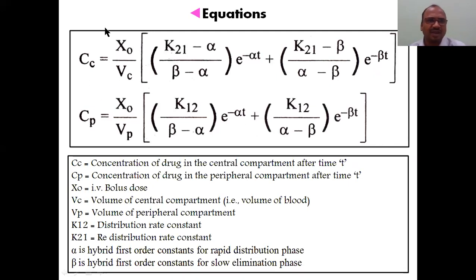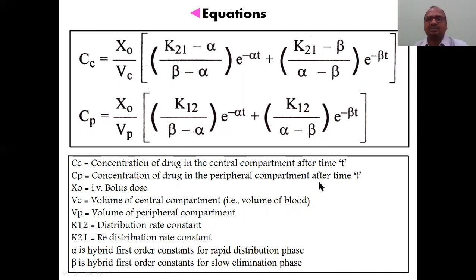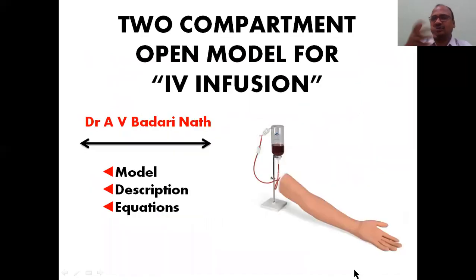For the equations: to determine the concentration of drug in the central compartment and the peripheral compartment, we use x0 divided by Vc. The constants alpha and beta are hybrid first-order rate constants. x0 is the dose, Vp is the volume of the peripheral compartment, and Vc is the volume of the central compartment. Using these equations, all values can be calculated. In the next video, we will cover the two-compartment open model for IV infusion.